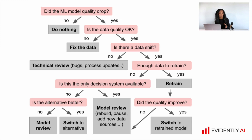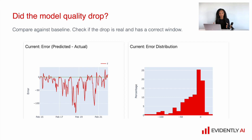If you have enough data to retrain the model, you might try to retrain it automatically and check the quality. You can automate this logic and follow it to update your model in production. Our first step is to check for model performance — did the model quality drop? It is always good to compare model quality against some baseline and check if the drop is real and covers the correct window. It is very important to distinguish between a quality drop on just a couple of objects versus a quality drop over the whole batch of data where there is a real problem.